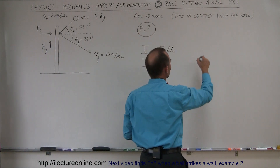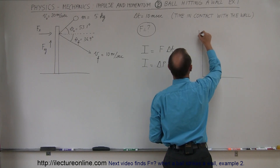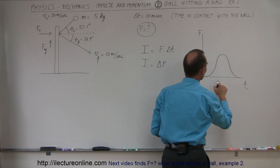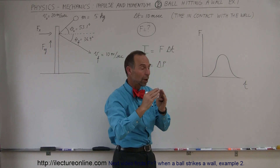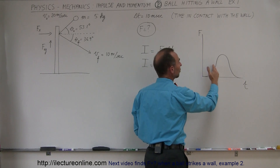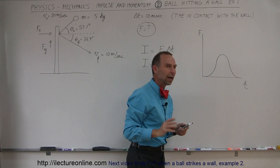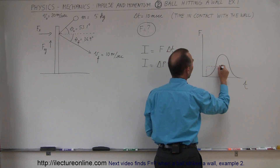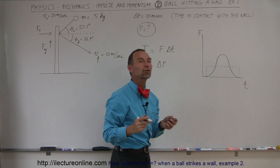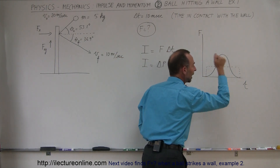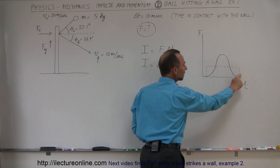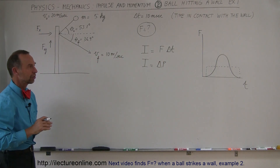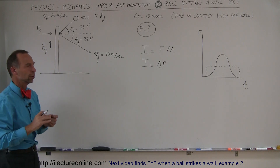We can also look at it graphically. If we draw a graph of impulse with force on the vertical axis and time on the horizontal axis, a typical collision will show that initially when contact is made there's not a lot of force, but as the collision continues the force increases, reaches a maximum, then decreases back to zero. What we're going to find is not the force as a function of time, but the average force — replacing the curve with a rectangular shape of equal area — so we find the average force in the x-direction and the y-direction.